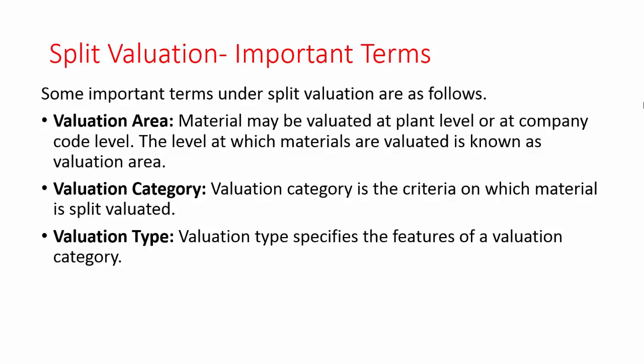The second term is valuation category. Valuation category is the criteria on which material is split-valuated. Whenever we create any material and if the split valuation is active, the system asks you for valuation category in the accounting view of a material master. Once you set up the valuation category into the material master, you are supposed to create the material for those valuation types which are assigned to that valuation category. Valuation type specifies the features of a valuation category. I will explain you all these three terms in the live demonstration of the example.